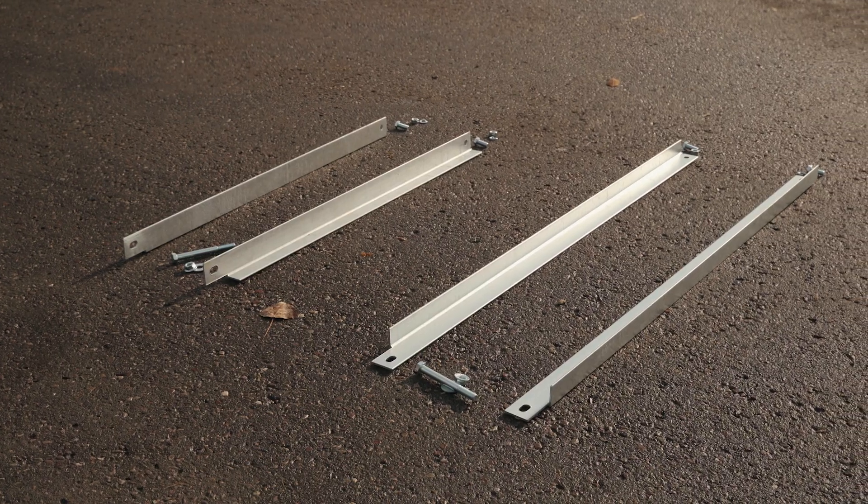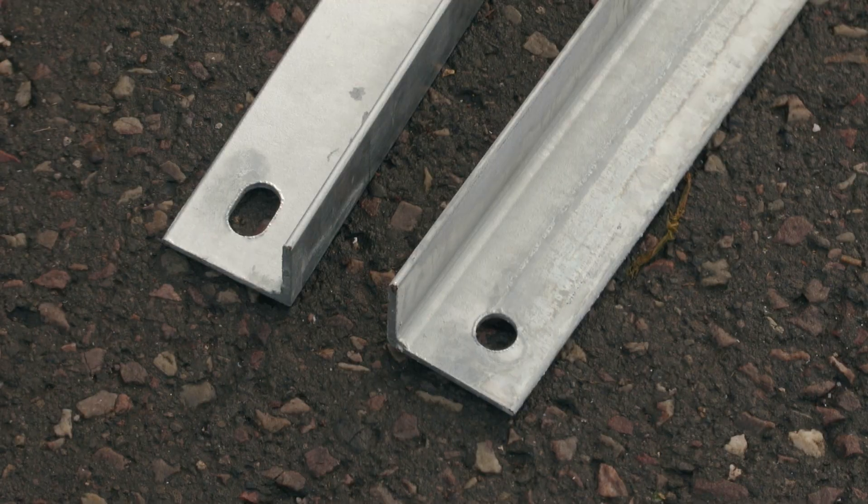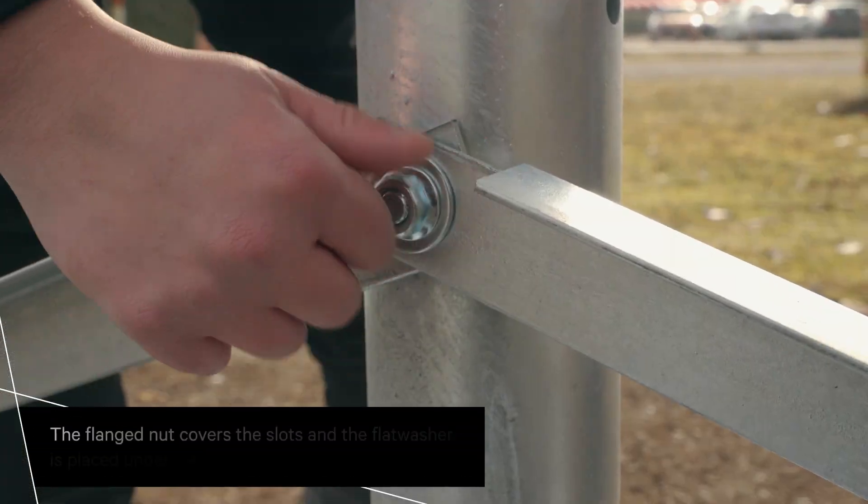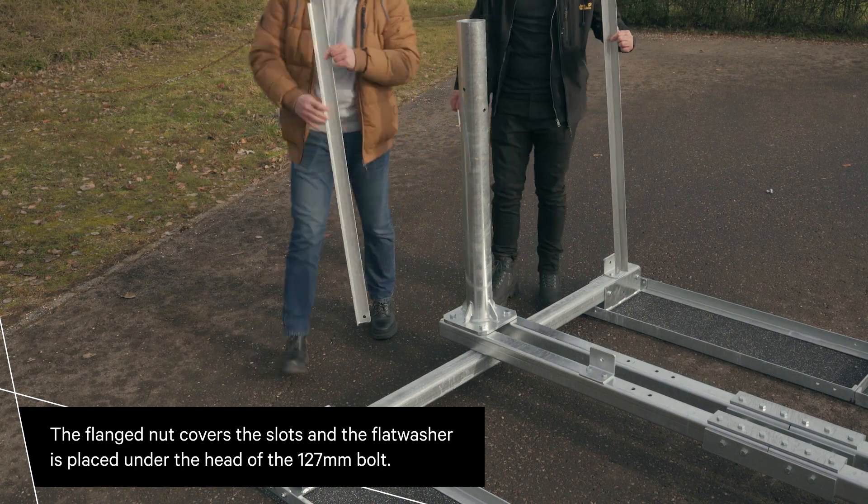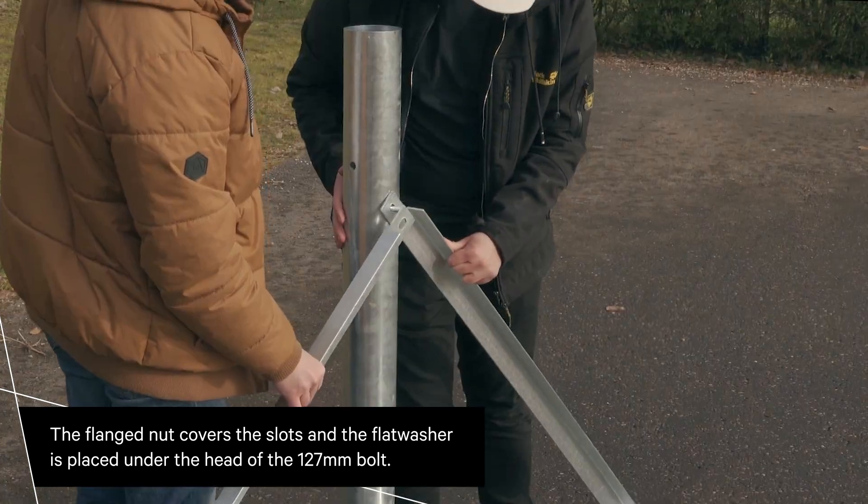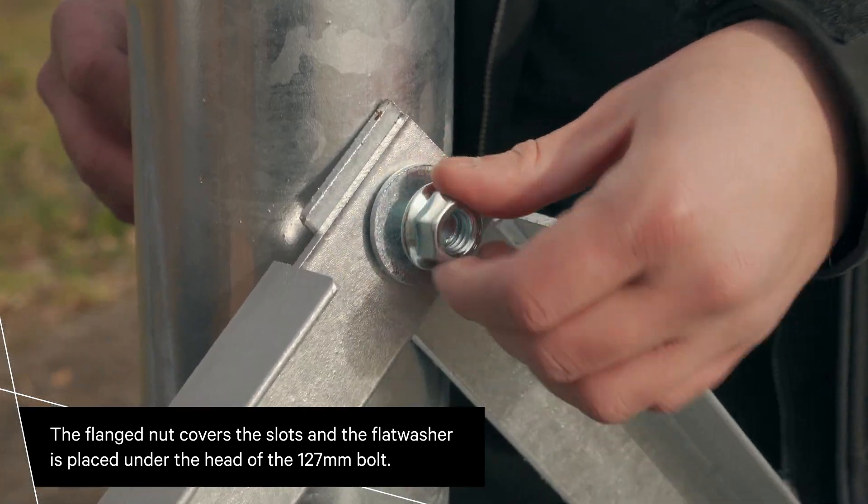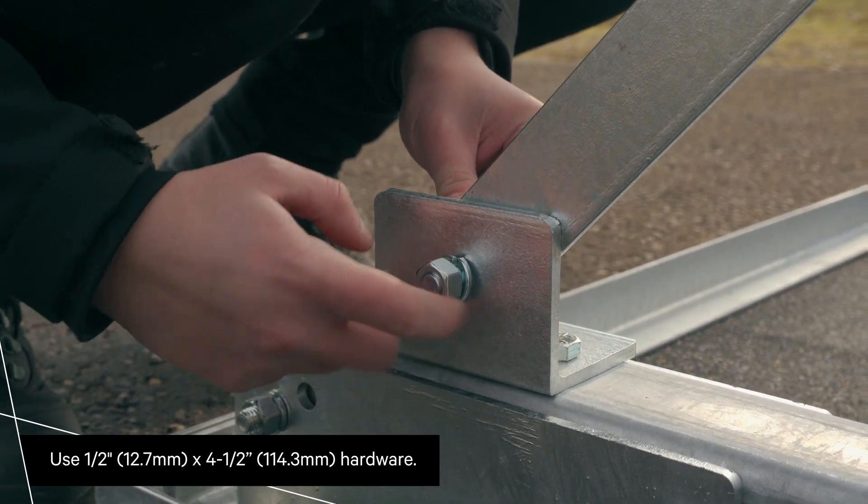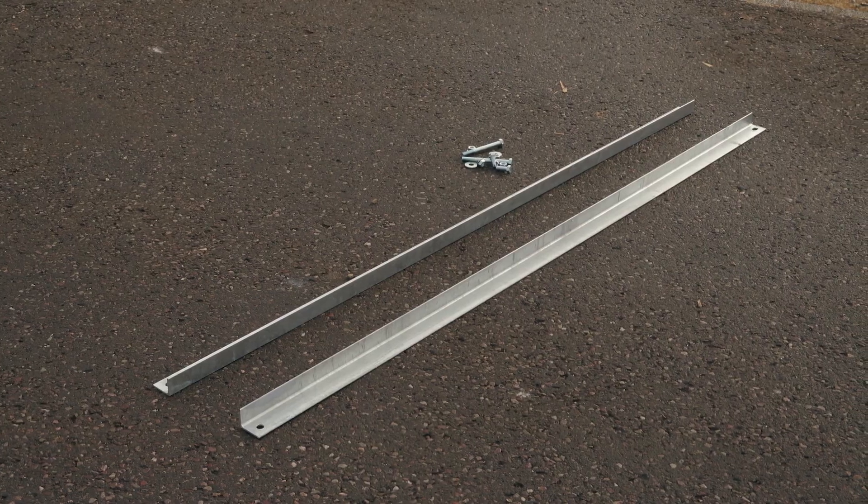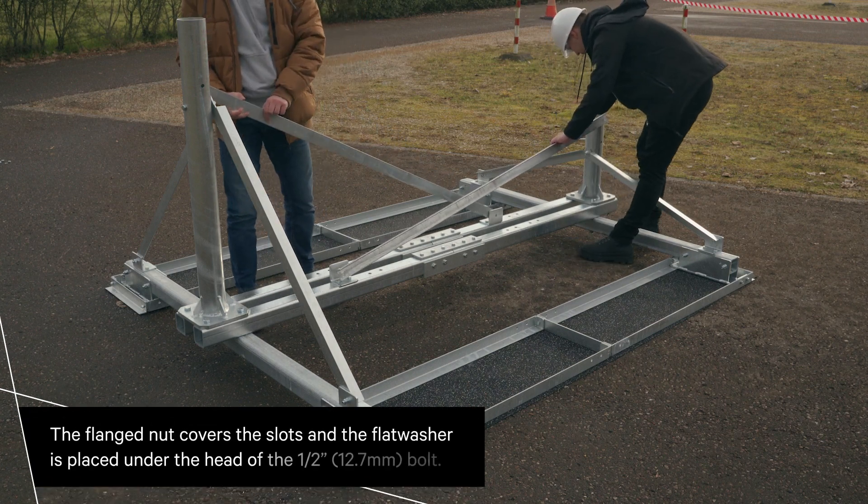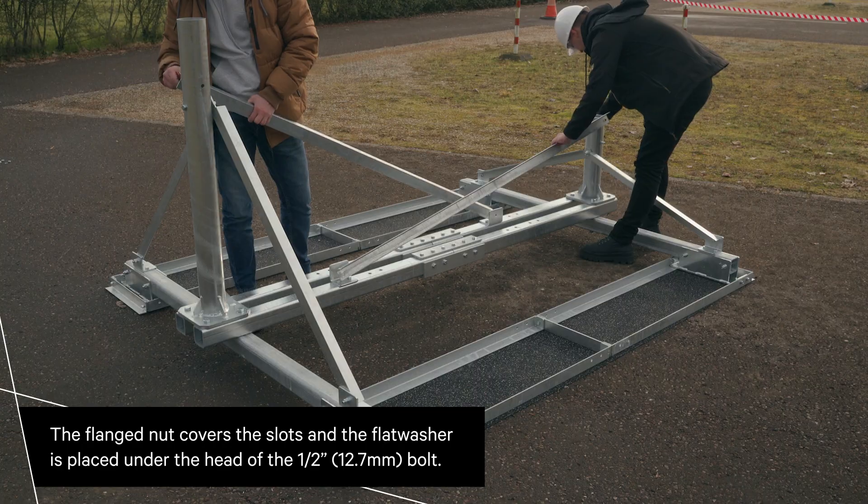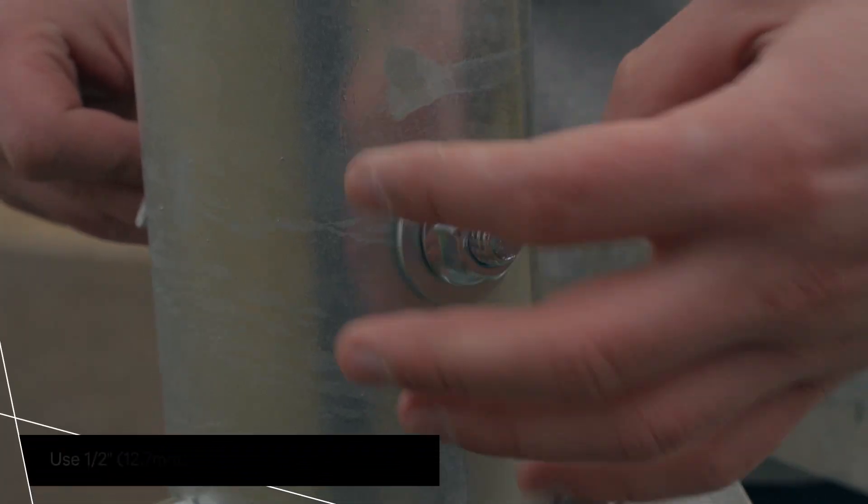Attach the diagonal braces making sure the slotted ends of the braces attach to the mast pipe. Secure the other end of each diagonal brace to the brace mounting tab. Attach the inner mast brace, again making sure the slotted end of the brace attaches at the mast pipe. Secure the other end of each brace to the mounting tab.